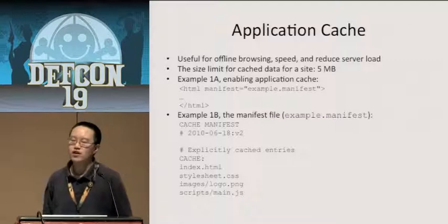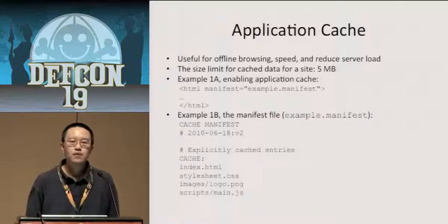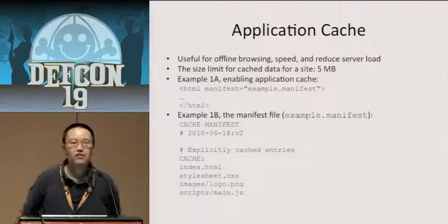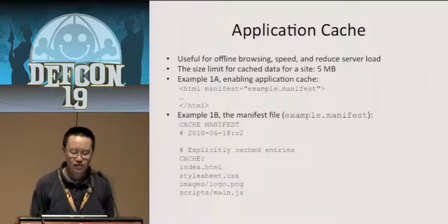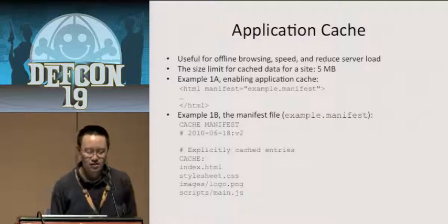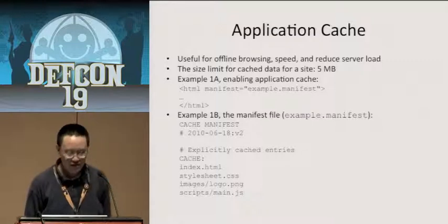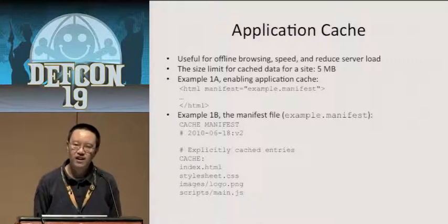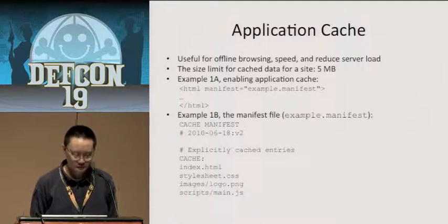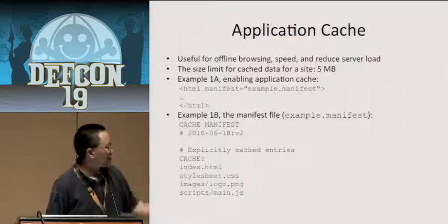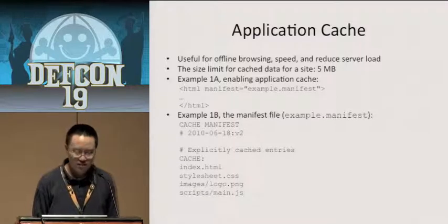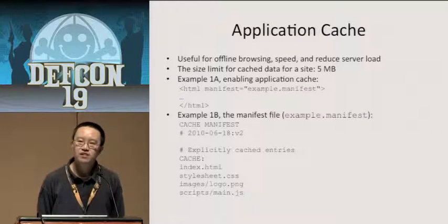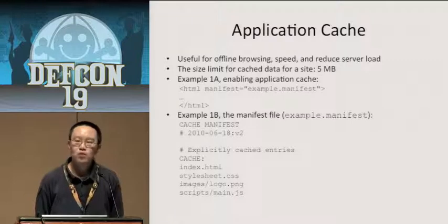Application cache is really cool for offline use, using a lot of games for example. If you're on a mobile device, you can't depend on networking all the time. It also reduces a lot of server load. The size limit for cache data is around five megabytes. There are two things you need to do to enable application cache. First, in the HTML tag specify the manifest file with manifest equals example.manifest. The manifest file lists the files that need to be explicitly cached — HTML, CSS, all the static content. You can also specify what content requires networking.